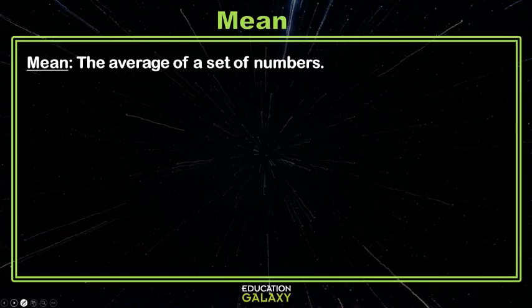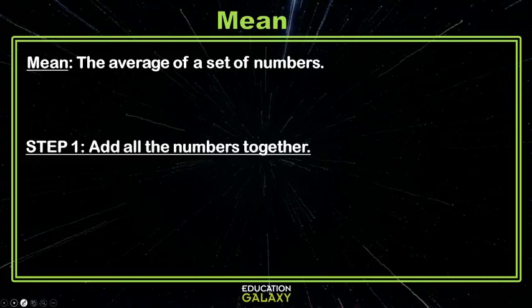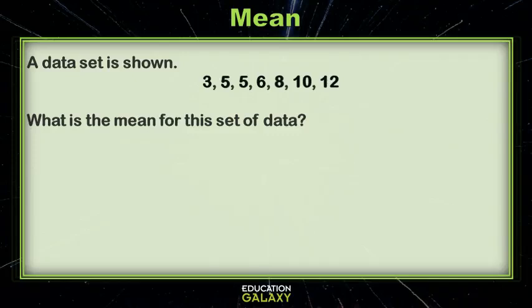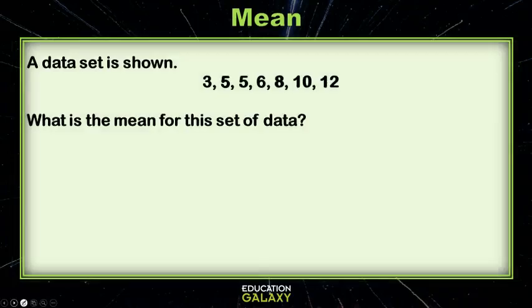Mean is the average of a set of numbers. To calculate the mean, first you add all the numbers together, and then you divide by how many numbers you added. Let's look at an example. Here's a list of numbers.